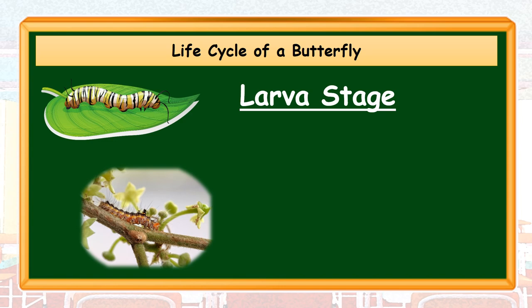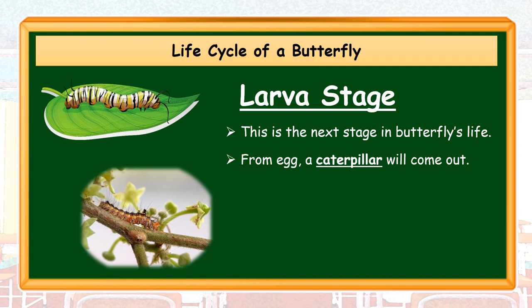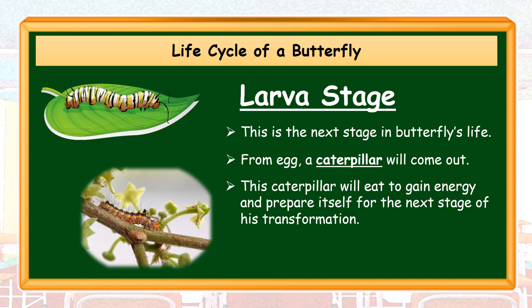Larva Stage. This is the next stage in the butterfly's life. From the egg, a caterpillar will come out. This caterpillar will eat to gain energy and prepare itself for the next stage of its transformation.